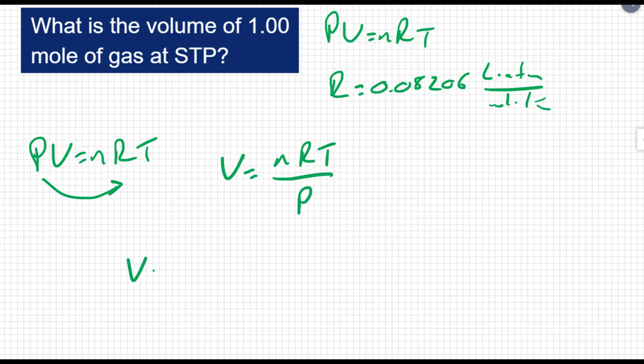So my volume is going to equal the number of moles. Well, we're told that this is going to be one mole. The ideal gas constant, 0.08206 liters times atmospheres over moles times Kelvin. And the temperature at STP is 273 Kelvin.